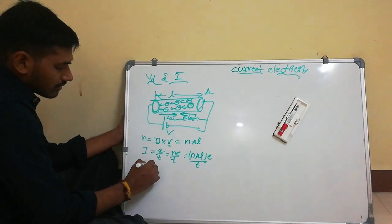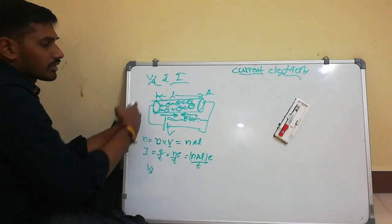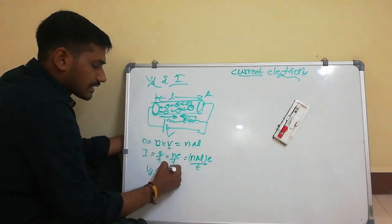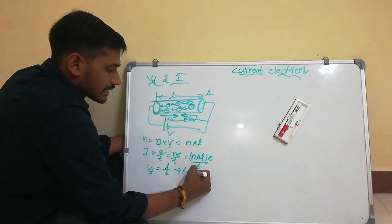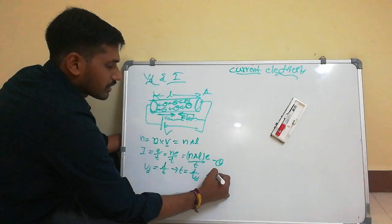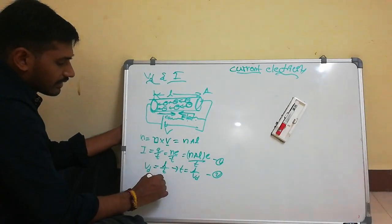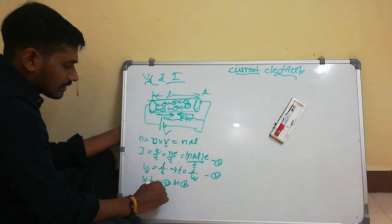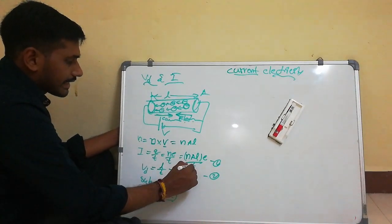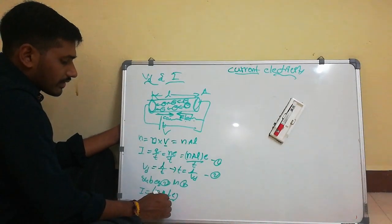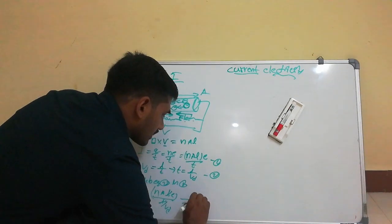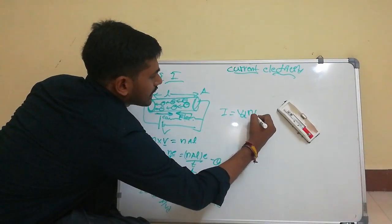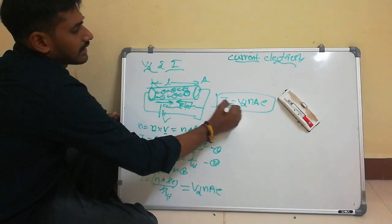After applying the potential to the conductor, the electrons move with drift velocity. We know that velocity = distance / time, so time = distance / velocity = L / Vd. We also know I = Q/T, and Q = Ne for N electrons, so I = NALE / T. Substituting T = L / Vd, the L's cancel, giving I = Vd × N × A × E. This is the relation between current and drift velocity.